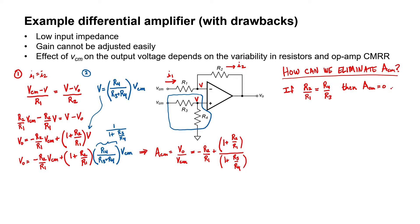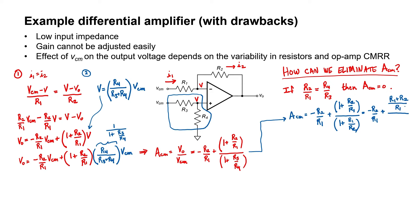The answer is that if R2/R1 equals R4/R3, then the common mode gain is zero. Let's verify that through substitution: when I get to R3/R4, I'll write R1/R2. Rewriting the first term and expanding the fraction, we get R1 + R2 in both the numerator and denominator — these cancel, and the second term becomes R2/R1. That's zero. The common mode gain for this amplifier is zero, but only if R2/R1 equals R4/R3. Therefore, when we design our differential amplifier, that's the condition we need to satisfy.